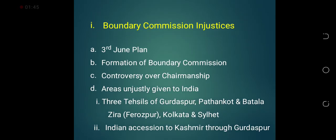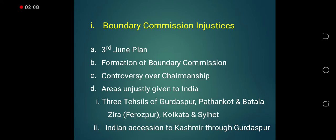The first problem is the boundary commission injustice. According to the third June plan, it was said that all Muslim majority areas would become part of Pakistan and Hindu majority areas would become part of India. It was also mentioned that all provinces would be asked whether to join Pakistan or India. In 1947, all provinces were asked. NWFP became part of Pakistan through referendum. Sindh joined through the provincial legislative assembly. The Balochistan Shahi Jirga decided in favor of Pakistan.